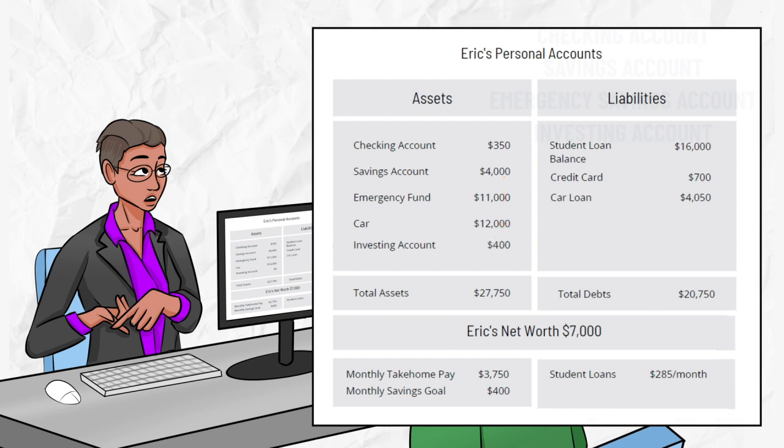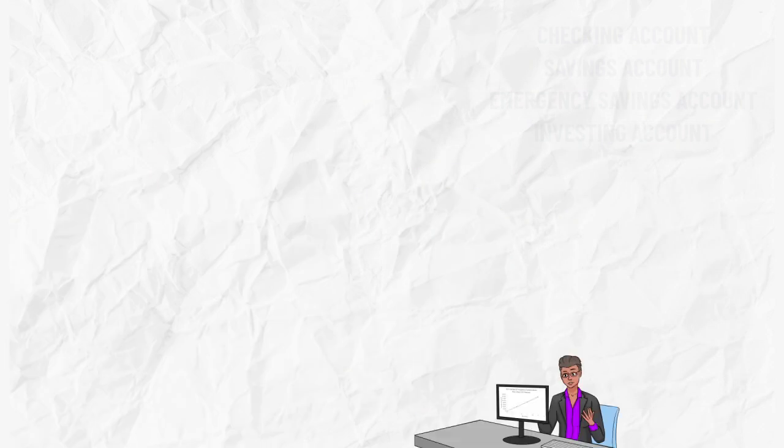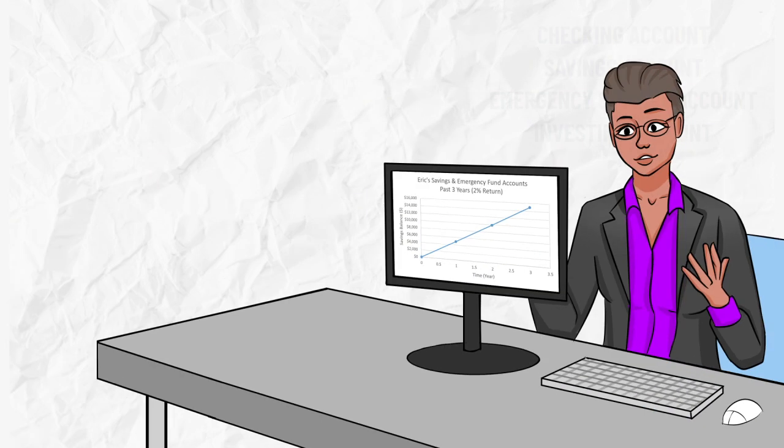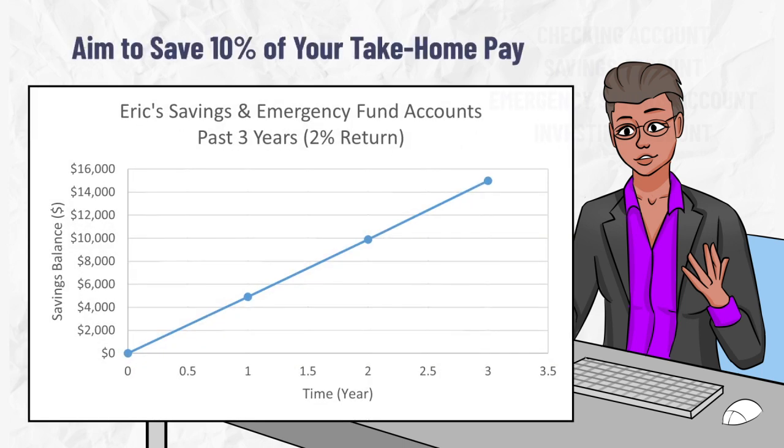His financial advisor recommends that he continues to save ten percent of his take-home pay, but now he should start putting it into his investing account instead of his savings account. If you can save more than ten percent, then do so, but saving less than ten percent will make it more difficult to reach your long-term financial goals.